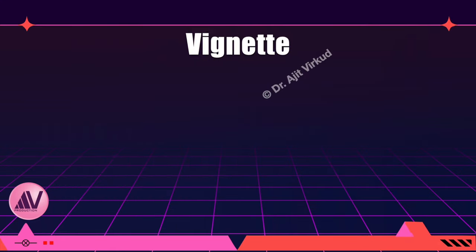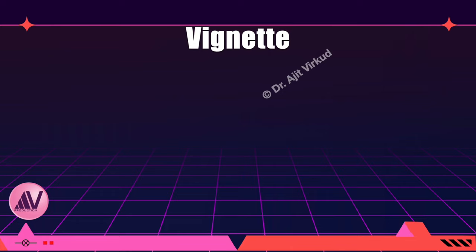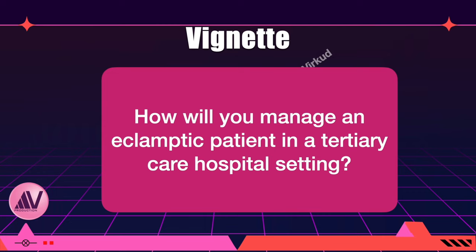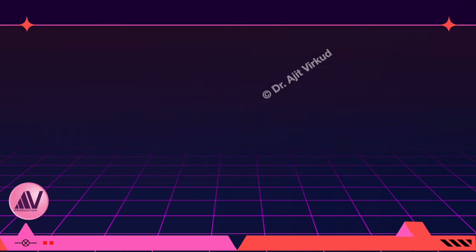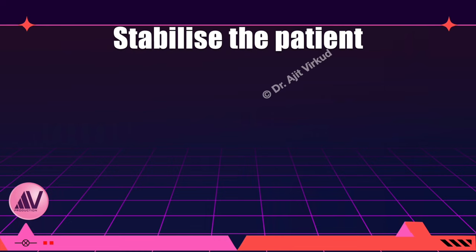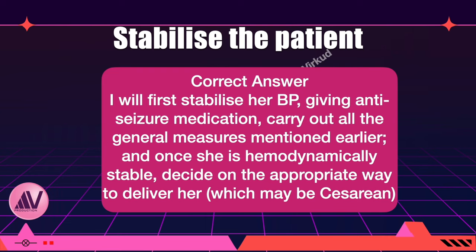Now that the patient has been admitted to the tertiary care hospital, how will you manage an eclamptic patient in that setting? The usual answer is: load her up with magnesium sulfate and perform an immediate caesarean delivery. This is the most incorrect thing to do, and yet in most institutions — especially in India — this is exactly what is done. The correct approach is to stabilize the patient before attempting to deliver her.